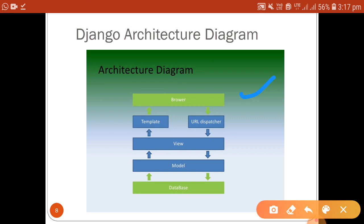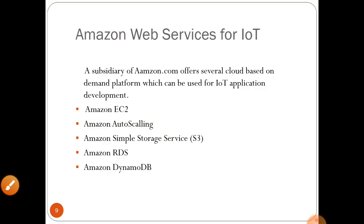In the Django architecture diagram, the browser at the top represents user interaction, where users access content through the Django framework. Templates are available immediately to help users implement and modify their own applications. The view component acts as an interface between the template and the model, interacting with the backend database. When deploying this IoT application to users, you work with this architecture along with the URL dispatcher.